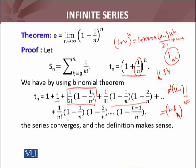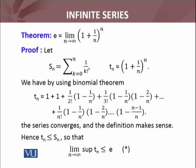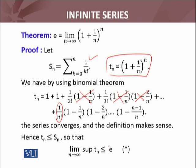The series converges and the definition makes sense. Furthermore, we have t_n less than or equal to s_n, because the sequence of partial sums has all positive terms. Removing those factors gives us s_n, so t_n ≤ s_n, and therefore the limit superior as n approaches infinity of t_n is less than or equal to the number e.